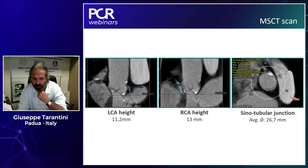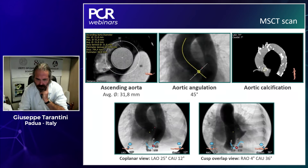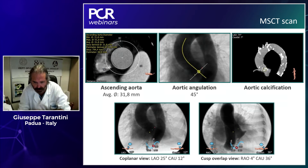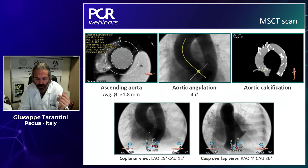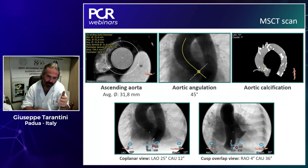The coronary takeoff height is 11 mm for the left and 13 mm for the right. The sinotubular junction is about 27 mm. Other things to consider: the angle of the aortic arch and calcification — we have 45 degrees of the ventriculo-aortic angle. In the pre-procedural planning phase, it's very important to envisage the co-planar view and calcification of the LAP view, not only to save time but to reduce contrast dye injection in this patient during the procedure.